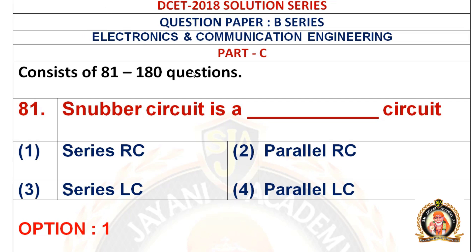For detailed solutions, visit our YouTube channel SaiGen Academy where you get all the solutions. Usually, the Electronics and Communication paper contains 100 questions. Each question carries one mark and it starts from the 81st question and ends at the 180th question.